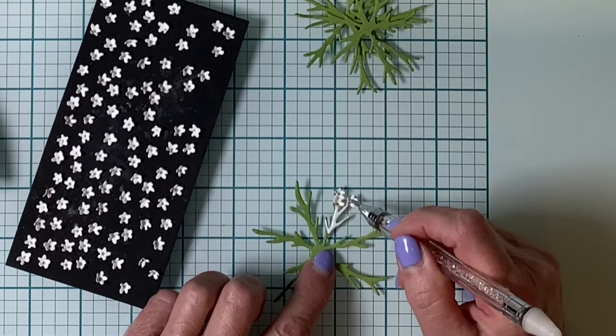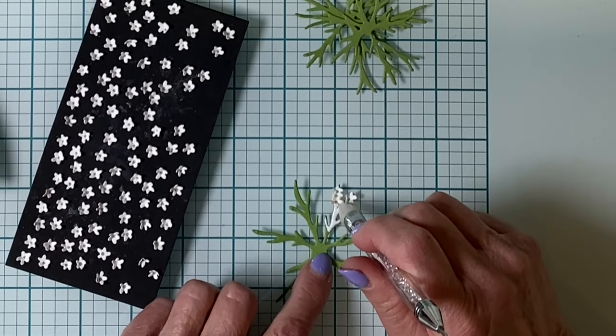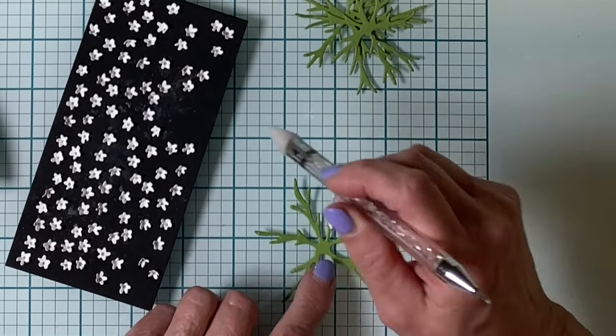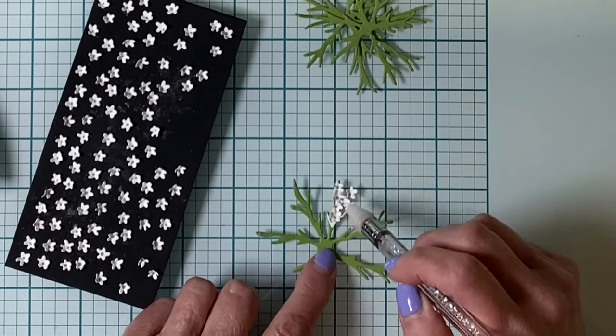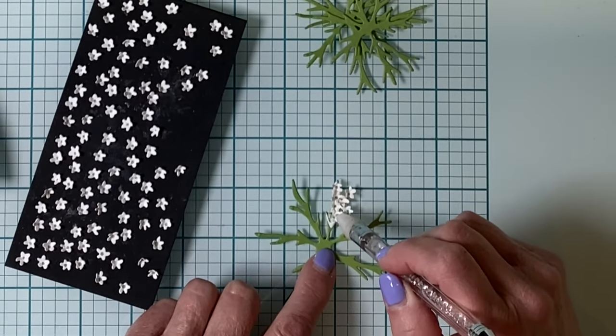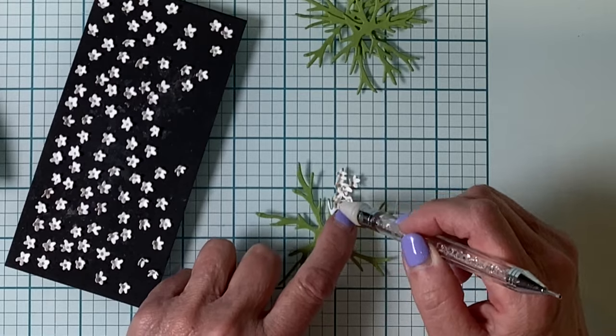I found it easiest to take my adhesive and place it along one of the branches fairly thickly but avoiding that central area of the base.